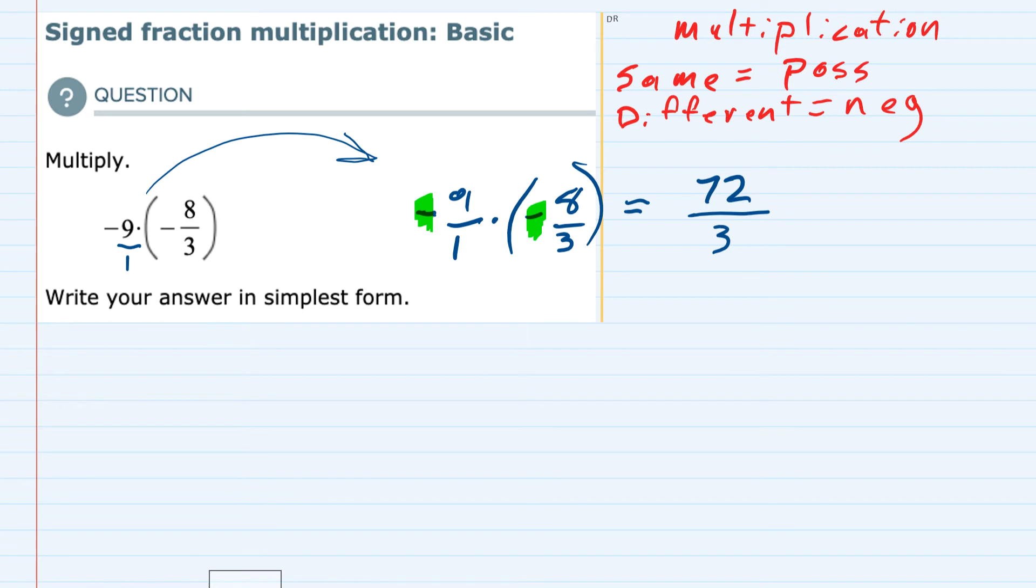But we are asked to write the answer in its simplest form. So 3 actually divides evenly into 72, 24 times. So our result is 24.